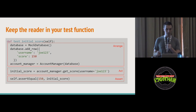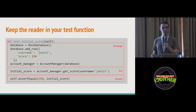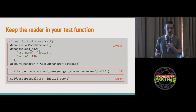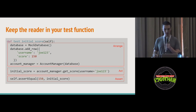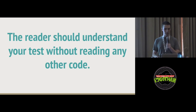Doing this creates an arrange, act, assert structure — a common pattern for unit testing. Arrange is where you set up your preconditions. Act is where you act on the object under test — in this case the Account Manager. Assert is where you verify your expectations were met. For another developer familiar with this pattern, it's much easier to read the test because it fits a pattern they recognize. The reader should understand your test without reading any other code; reading it top to bottom is a huge win for simplicity and intelligibility.